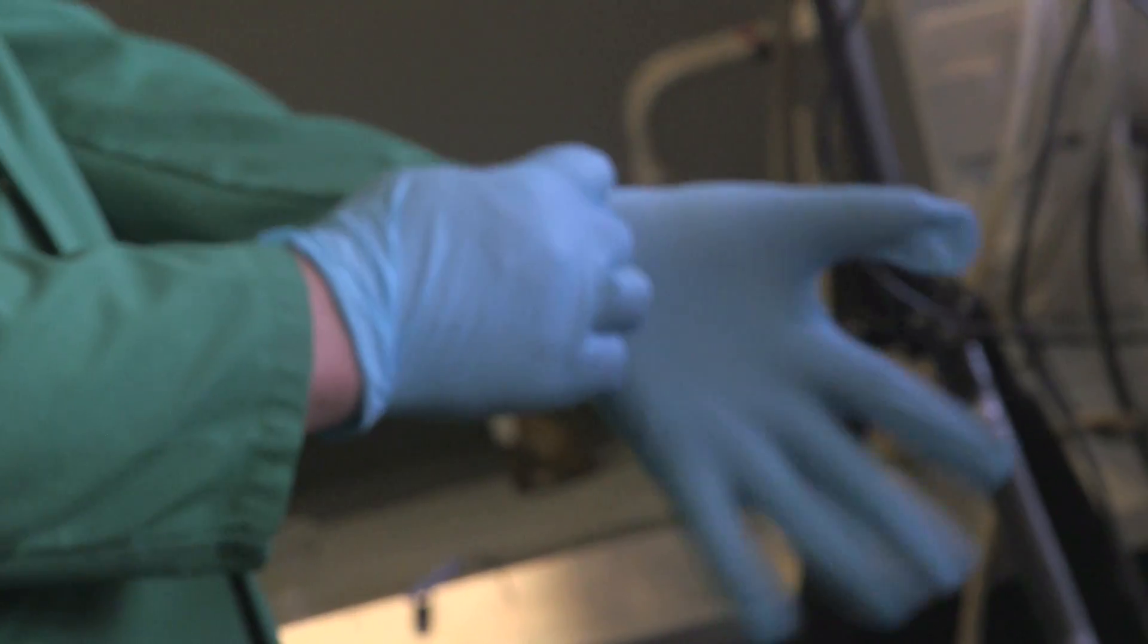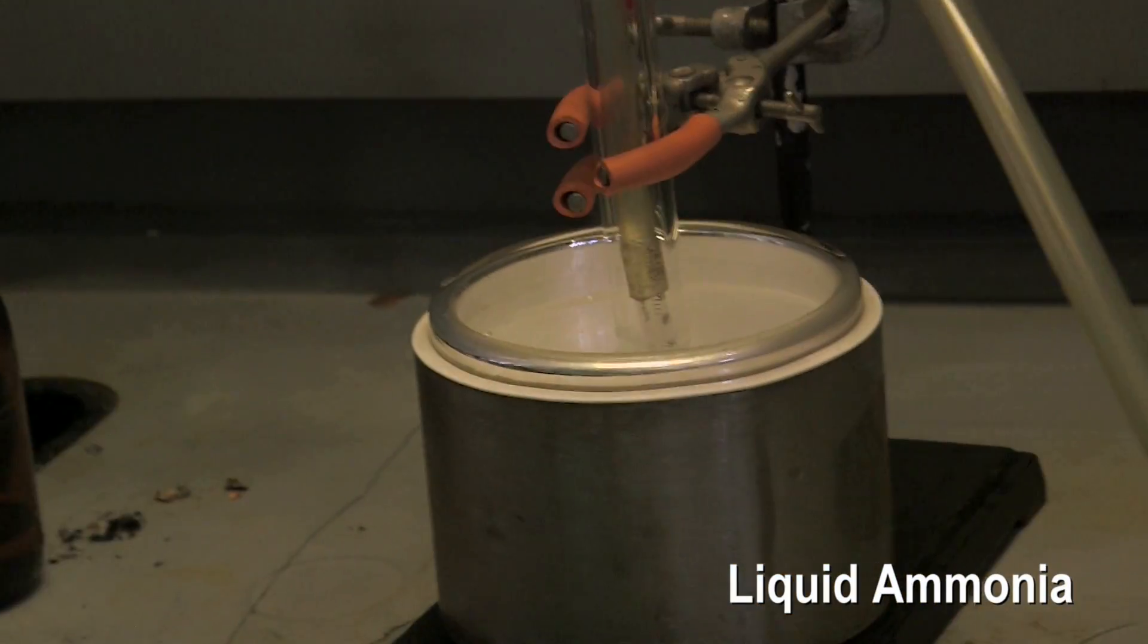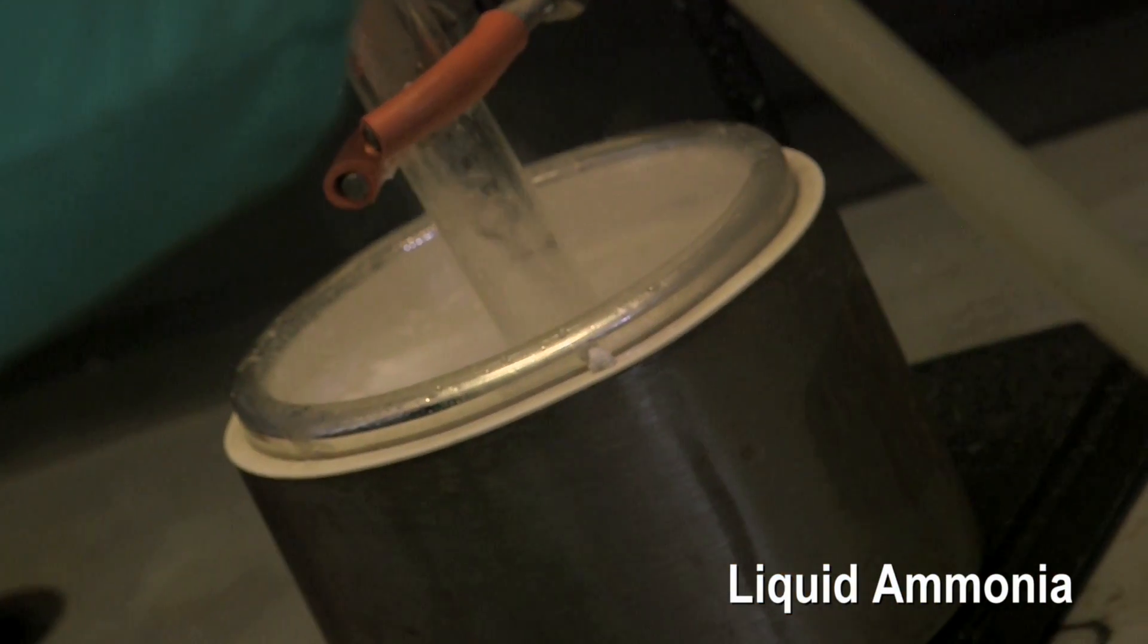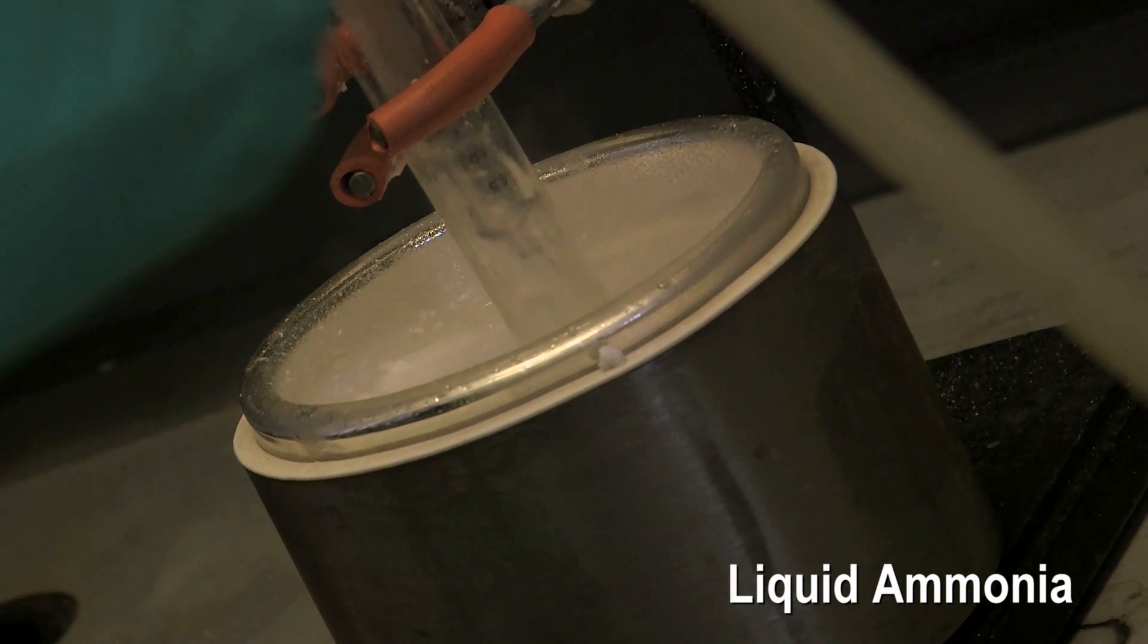We're going to put some sodium into liquid ammonia. What happens is that the sodium reacts, it releases an electron, becomes sodium single plus, and those electrons get solvated by the ammonia.